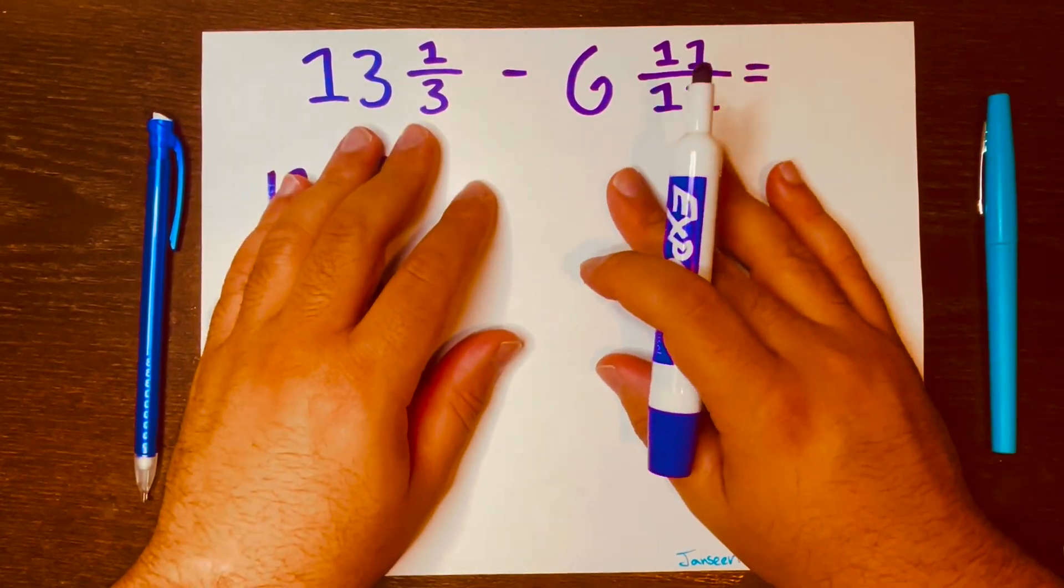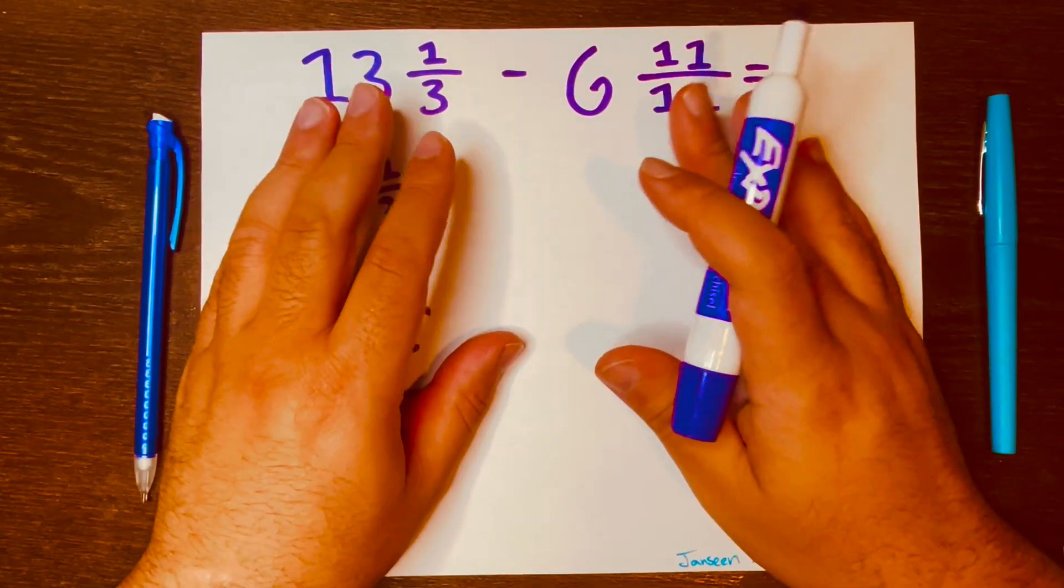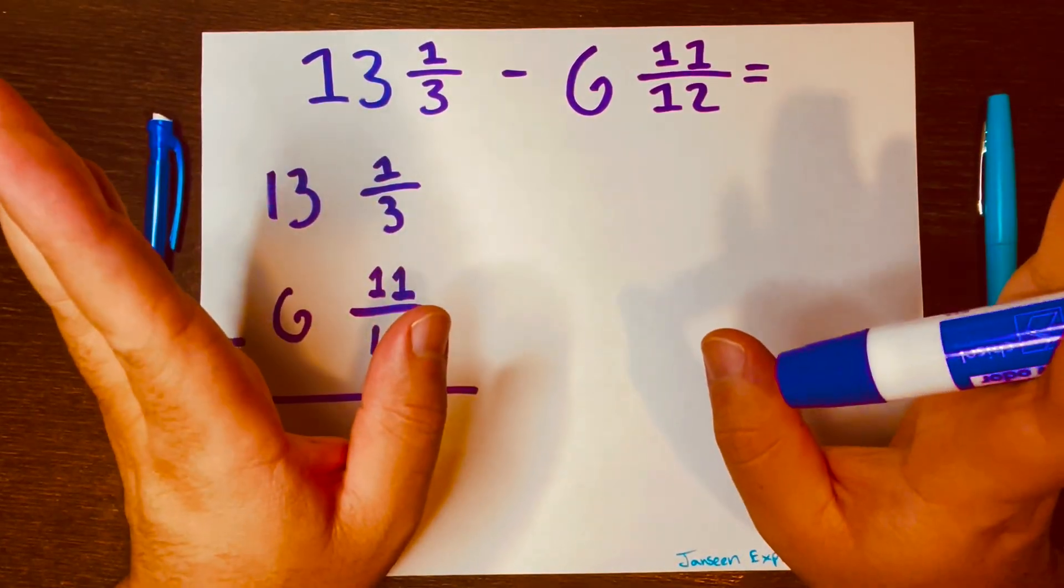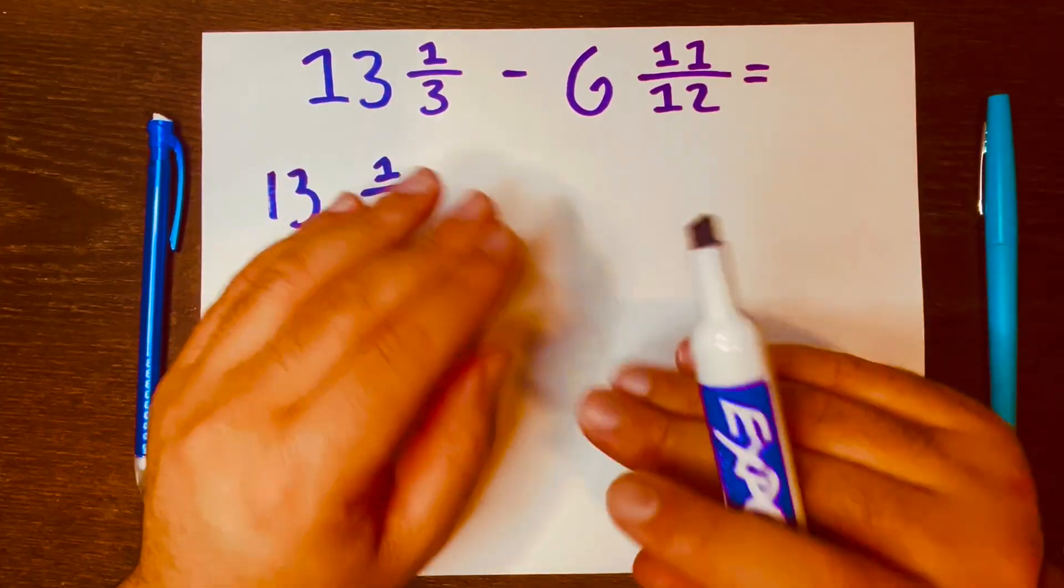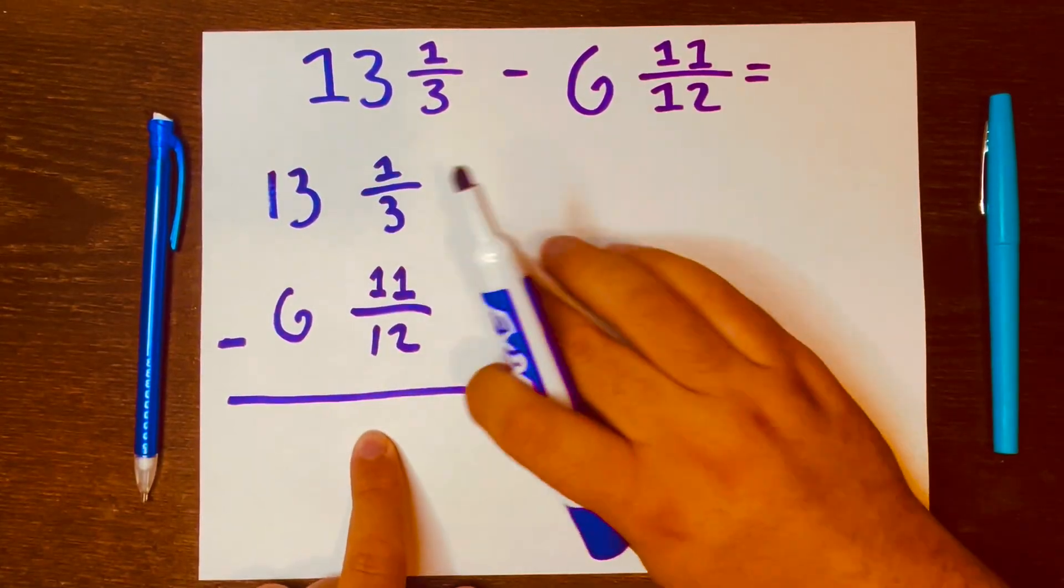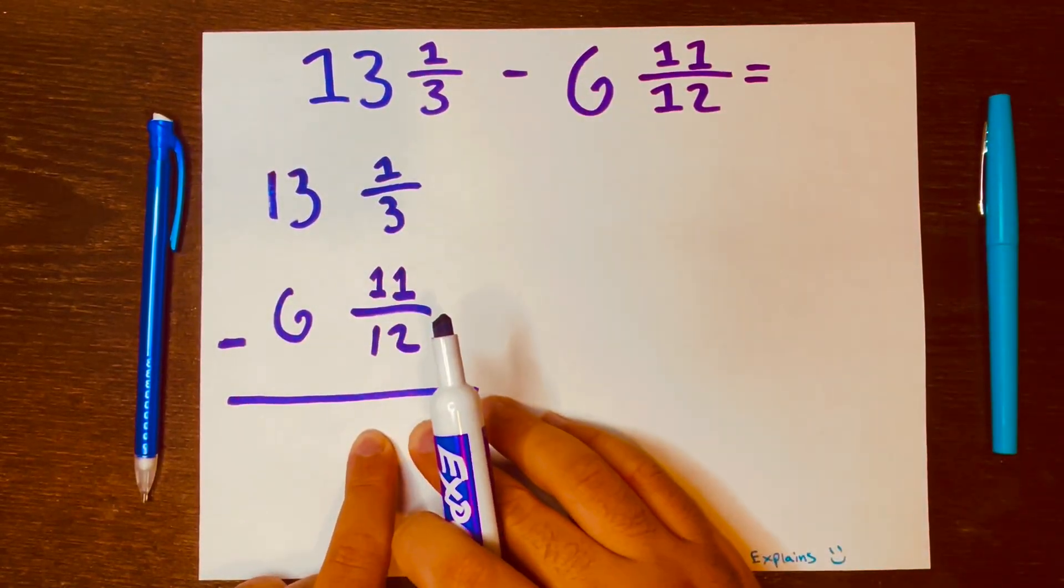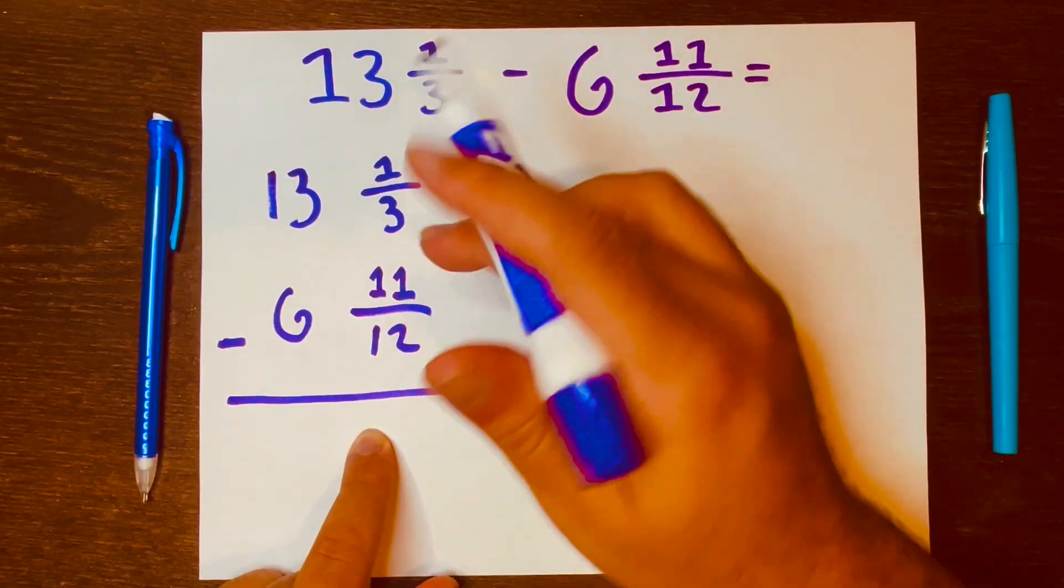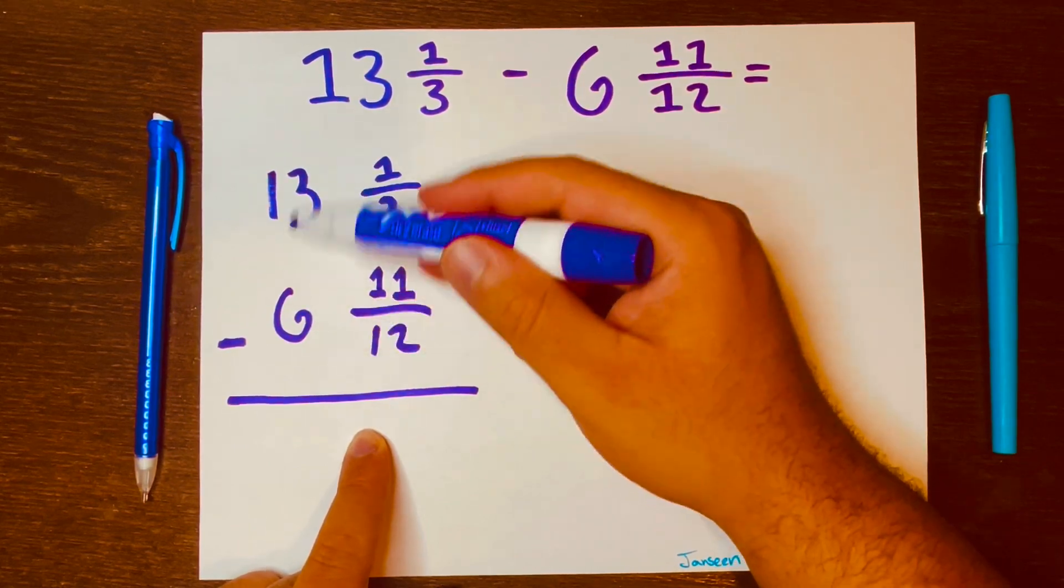Now some people would just turn these mixed numbers into improper fractions and then subtract them and then get an answer and that's okay. However, that's going to take a lot of multiplication and division and may take more time. So I think doing it this way or solving this problem vertically will be much easier and faster. And we will start working with the fractions first and then we'll work with the whole number second.